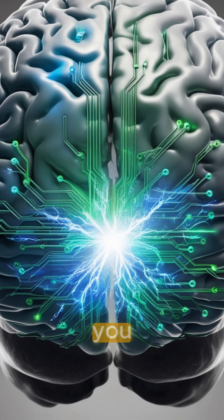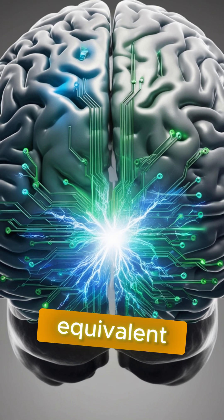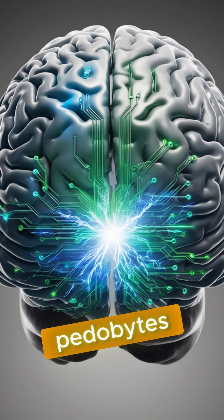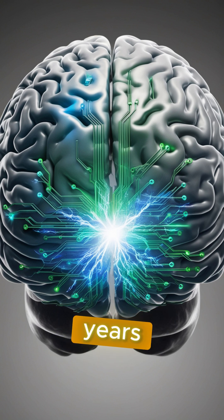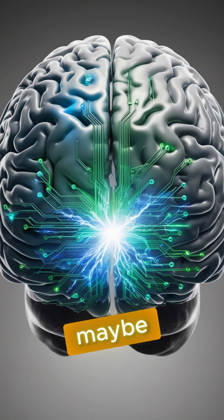Fact 3. Did you know that your brain can store the equivalent of 2.5 petabytes of information? That's enough to store 3 million hours of video. If you decided to watch all these videos, it would take you over 300 years. Who knows, maybe your brain holds more than you think.